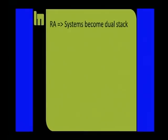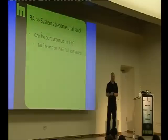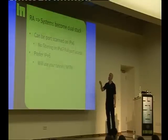Send a router advertisement and systems become dual-stack. If there's no router advertisement, or you don't activate IPv6 manually, the system thinks it only has IPv4 and only uses IPv4. Once there's a router advertisement, all systems in default configuration become dual-stack. You can port scan on IPv6, and some commercial firewalls don't filter IPv6 — they just allow it through. Full port access, full port scanning on the local network, just by sending one router advertisement.